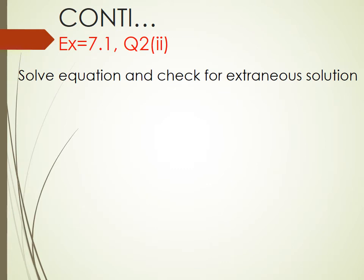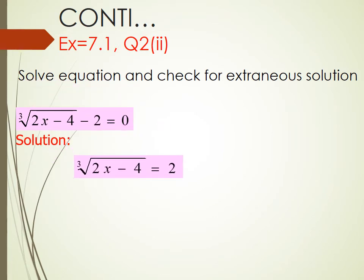Exercise 7.1 Question number 2 of part 2. Solve equation and check for extraneous solution. We have cube root of 2x minus 4 minus 2 equal to 0. First, we will shift 2 on the other side. We get cube root of 2x minus 4 equal to 2.